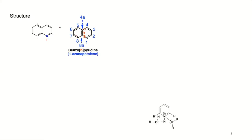The scientific name is benzo[b]pyridine. B means the bond connected to the junction — you have the hetero atom and carbons labeled A, B, C, so B is the common bond between the benzene ring and the pyridine ring. You can also give the replacement name: since nitrogen is at position one, it is 1-azanaphthalene. The general name is quinoline.